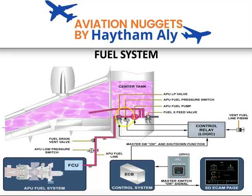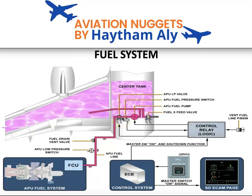What other scenarios will close the APU low pressure valve? If you press and hold the fuel vent pushbutton switch and then release it, it will close the APU low pressure valve. Also, from the external power panel, if you press the APU shut-off pushbutton, it will trigger an emergency shutdown — the APU will shut down immediately, closing the low pressure valve as well.